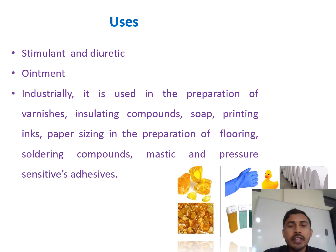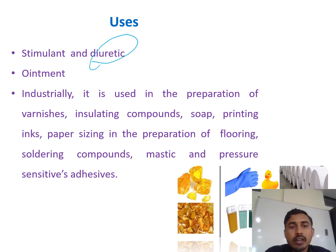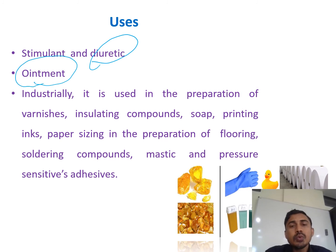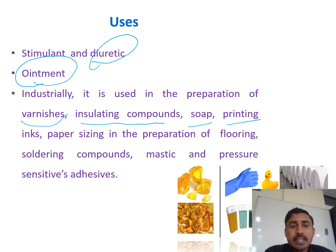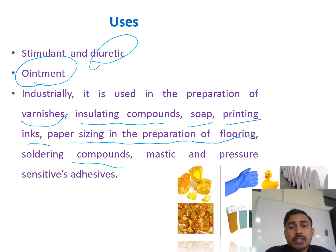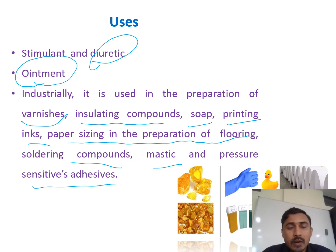Colophony is used as a stimulant and also has diuretic properties. It is used in the preparation of ointments as a base. Industrially, it is used in the preparation of varnishes, insulating compounds, soaps, printing inks, paper sizing, flooring compounds, soldering compounds, mastic, and pressure-sensitive adhesives. These are some important uses of colophony resin.